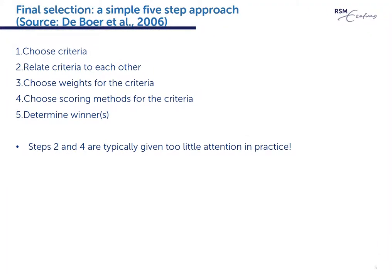A paper by DeBoer and colleagues from 2006 proposes a five-step approach to the final supplier selection phase: 1. Choose criteria. 2. Relate the criteria to each other — in other words, how important are the criteria in relation to each other. 3. Set criteria weights. 4. Choose the scoring methods. 5. Determine the winner. In this presentation, I focus on steps 2 and 4, not only because DeBoer et al. argue that they are typically neglected in practice, but also because I discussed the inputs for deciding on criteria and their weights extensively in part 1.